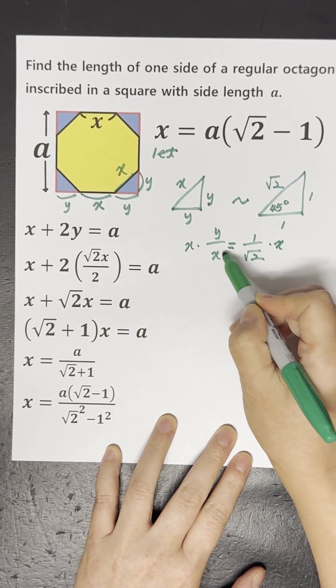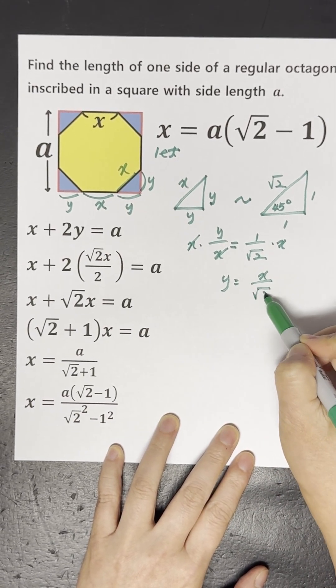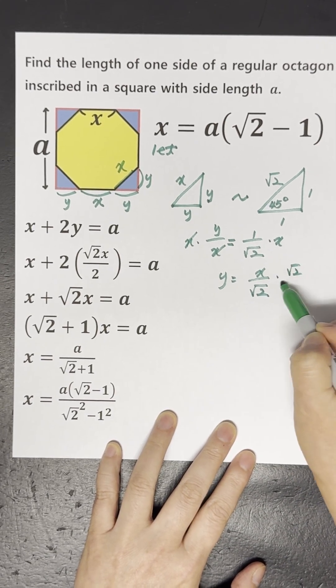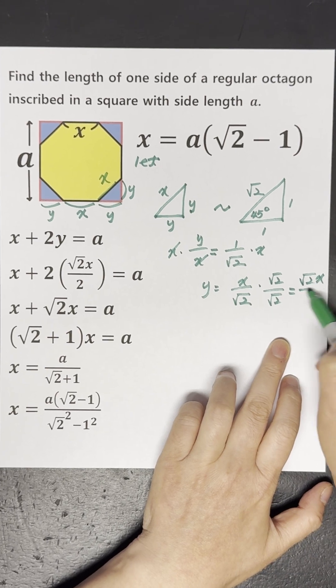Solving for Y gets us square root 2X over 2.